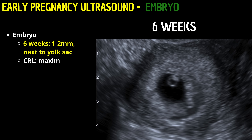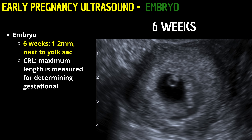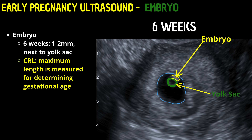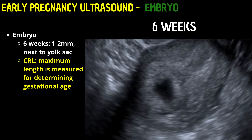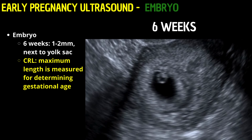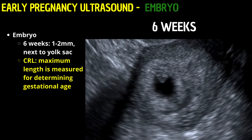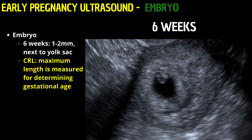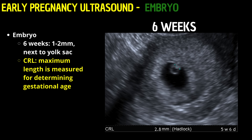By the six-week mark, the embryo, or fetal pole, is visible next to the yolk sac, measuring 1 to 2 millimeters. The crown-rump length is key for dating the pregnancy. If the embryo's ends are unclear, its maximum length is measured for early accuracy.